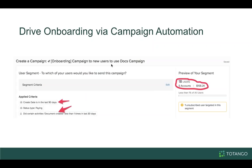This is a specific onboarding campaign for a product dealing with document creation. The logic in the applied criteria: customers in the last 90 days who are paying and have created fewer than one document — meaning they haven't really created any documents. On the right, we have a preview showing 18 users across five accounts with the revenue represented. We can email something very specific to these end users to give them a reason to start creating documents. That's part of the campaign ideas you can leverage.